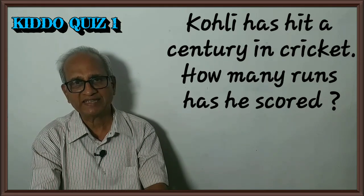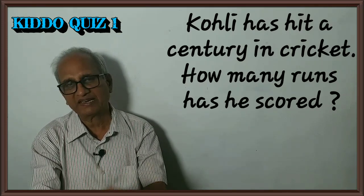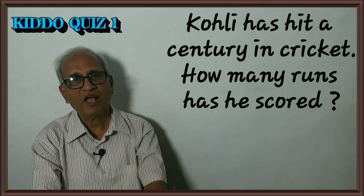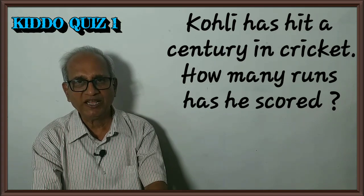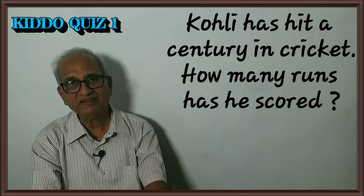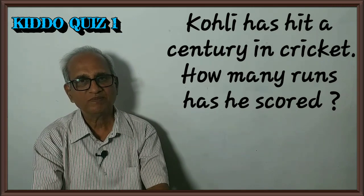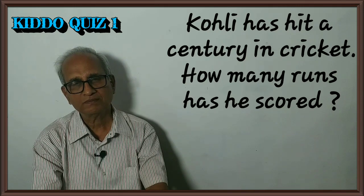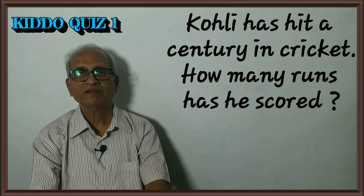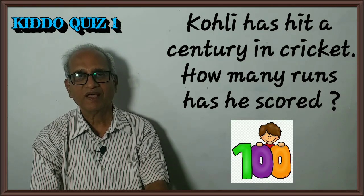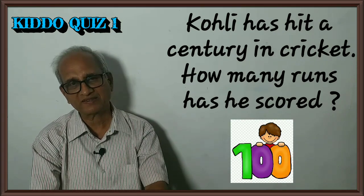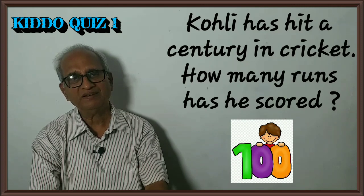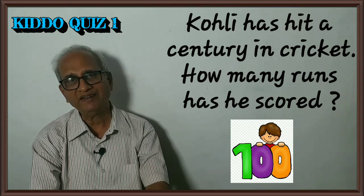Fifth question: Coley has hit a century in cricket. How many runs has he scored? The answer is one hundred. If a batsman hits a century, we mean he has scored one hundred runs.